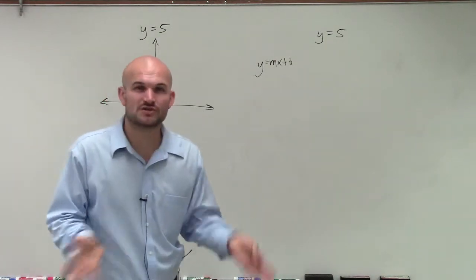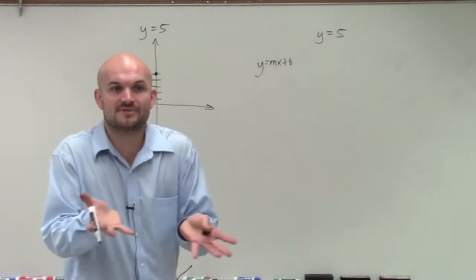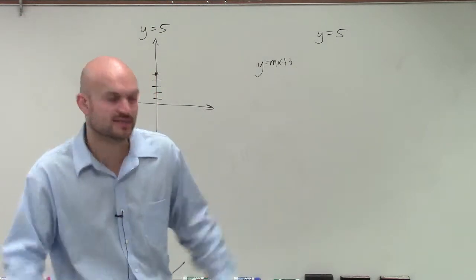And then I'm going to have a slope of 0. So how do I find my next two points, right? If I have a slope of 0, how am I going to find the next point where it's going to go to?